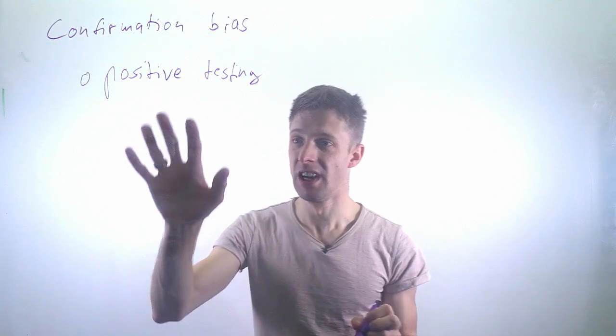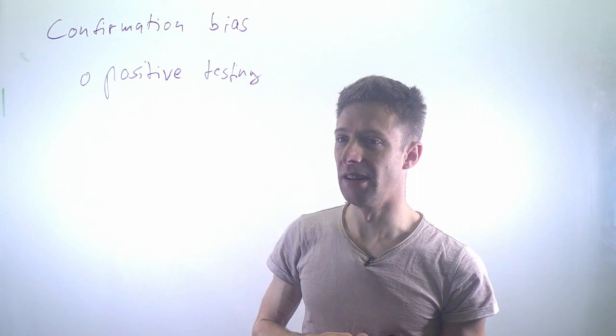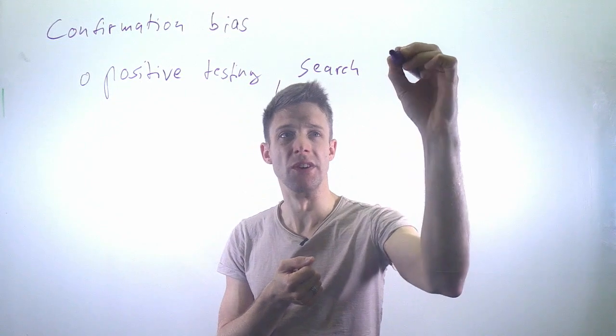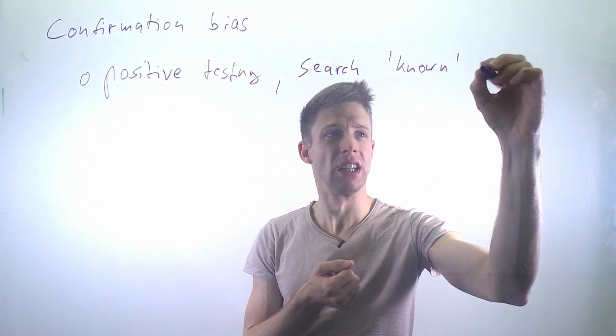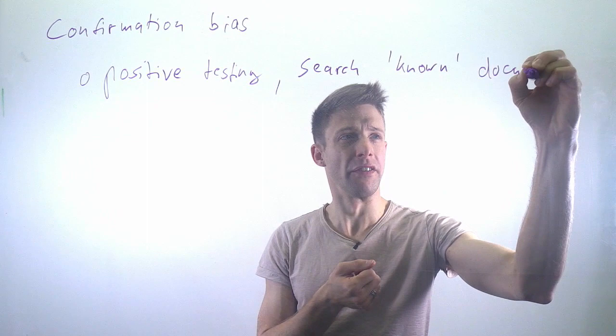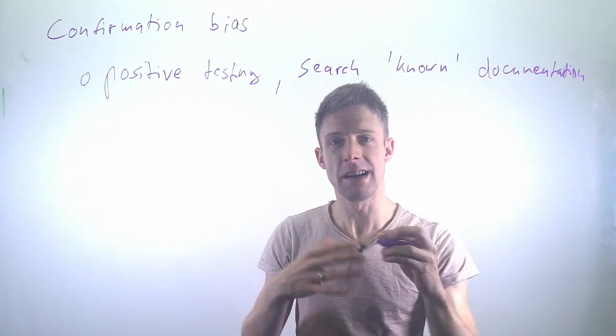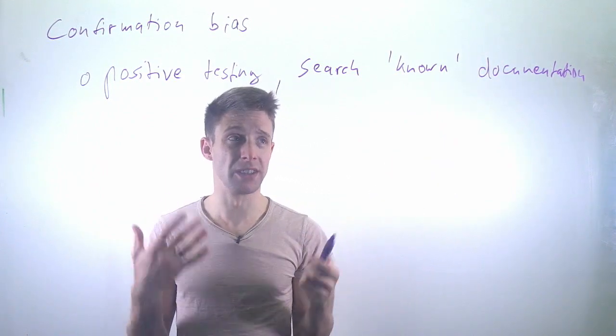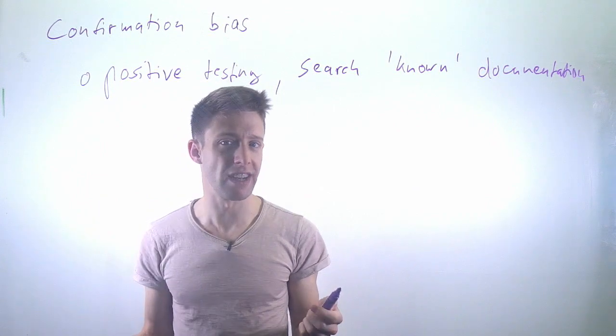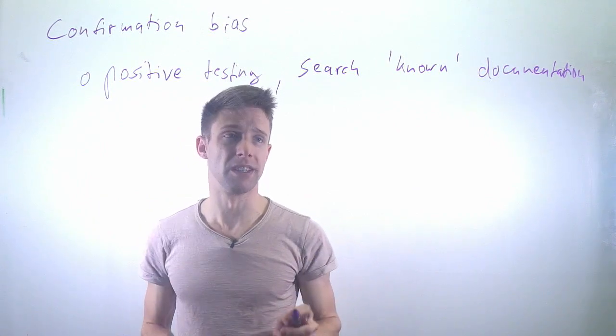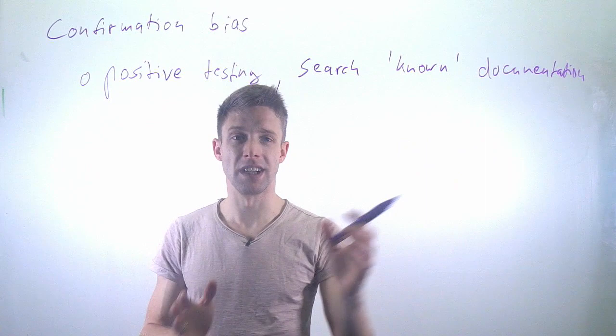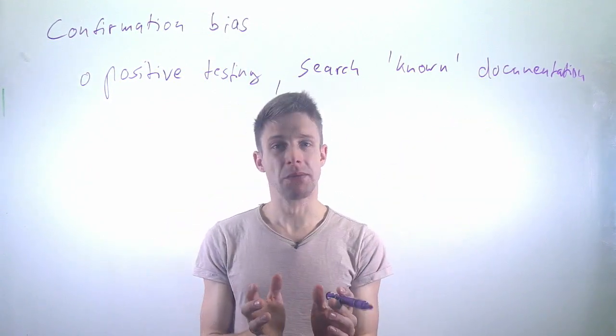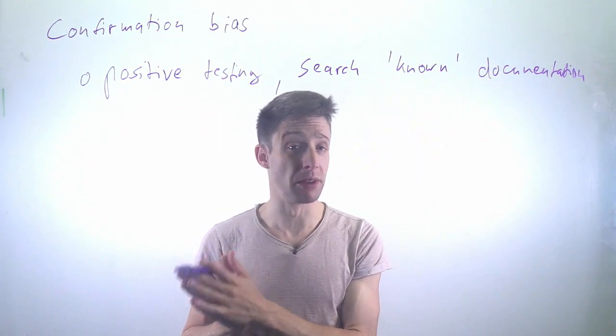We tend to do positive testing and search known documentation. When trying to find information on how to use a library, we always favor things we already know. We'd rather go to chapter one that we've already read, even though chapter three might be exactly what we're looking for. We tend to look in areas we already know.